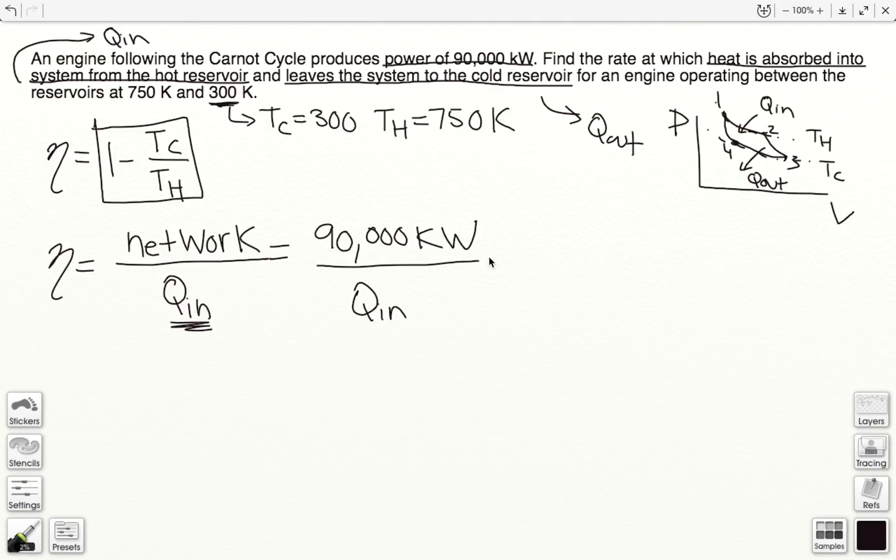We'll have the efficiency here, the net work done, and we can solve for Q_in. So our efficiency will be 1 minus, our Tc is 300, and our Th is 750. This is equal to 0.6.